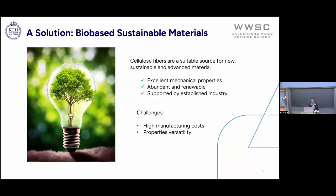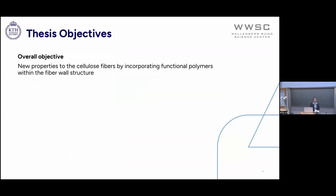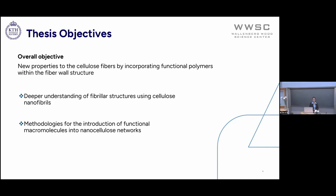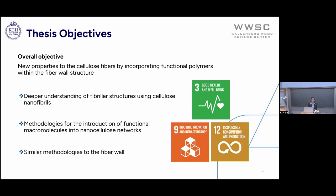Which brings me to the first objective. I'd like to get new properties for the cellulose fibers by incorporating macromolecules within the fiber wall structure. I have a few specific objectives: a deeper understanding of the fibrillar structure using cellulose nanofibrils, a better methodology for the introduction of functional macromolecules within the nanofibrillar structure, and similar methodologies that we can apply back to the fibers. Along the course of my thesis, I explore other materials that support sustainable development goals number 3, 9, and 12.